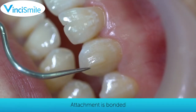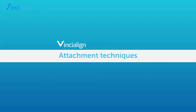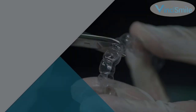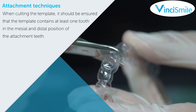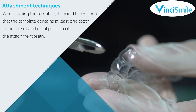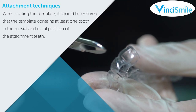Attachment techniques: when there are more attachments on the appliance, the attachment can be segmentally bonded in order to ensure good tightness between the template and the teeth. When cutting the template, it should be ensured that the template contains at least one tooth in the mesial and distal position of the attachment teeth.